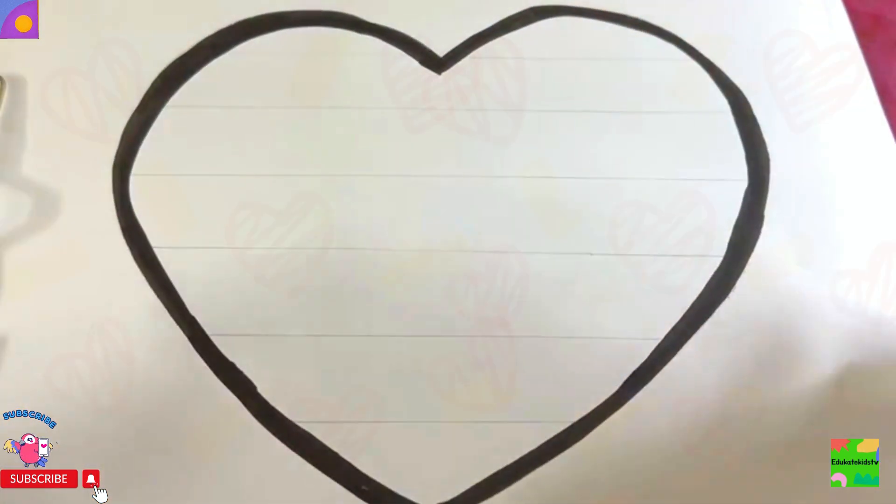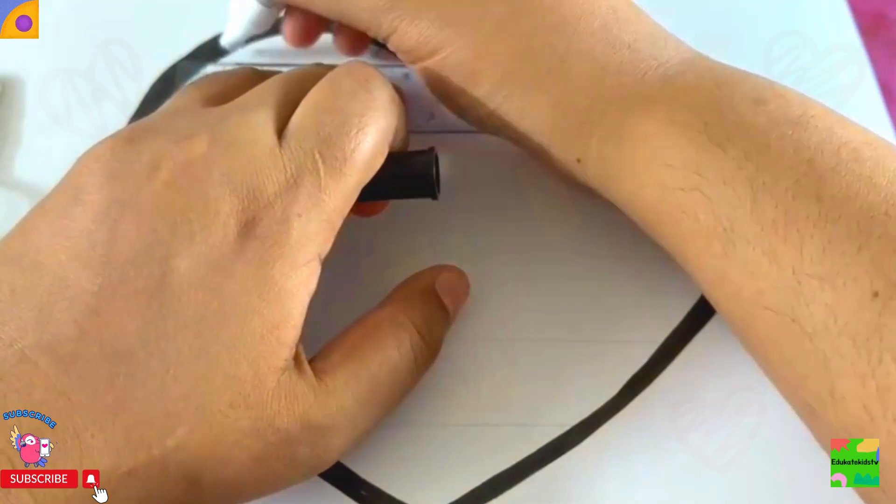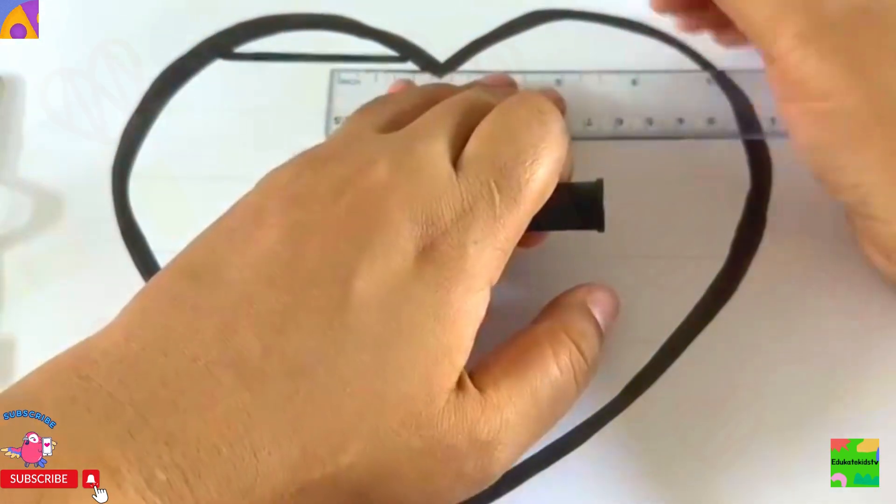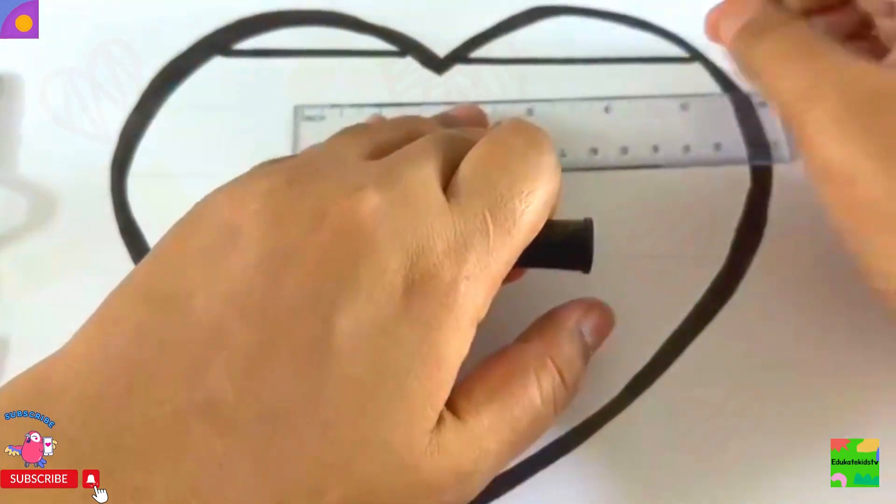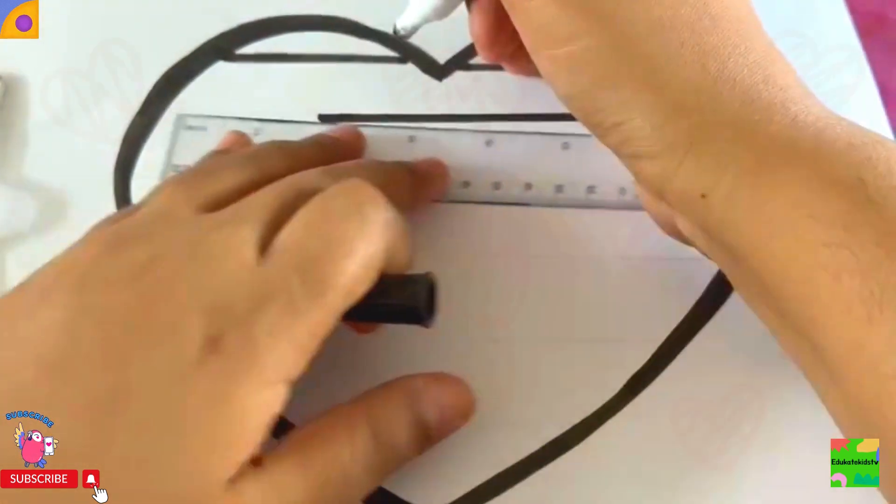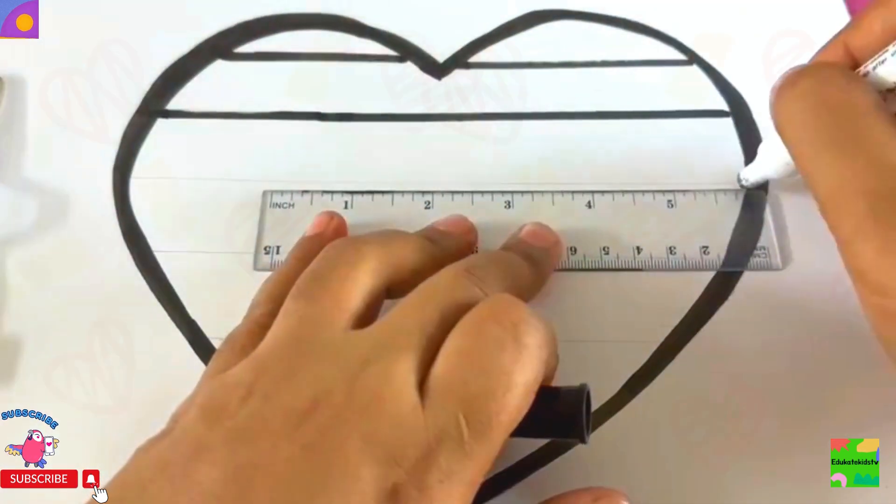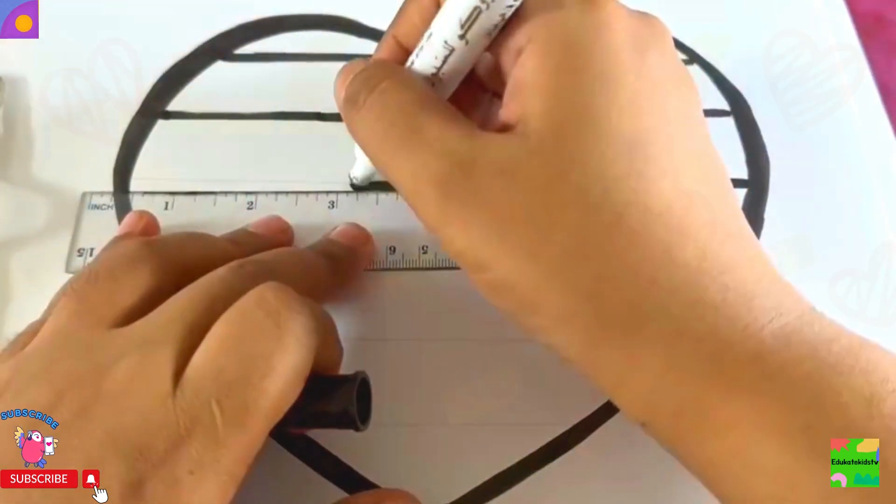Now I'll draw the lines inside it with my ruler. Wow! Lovely! A big heart to make a pop-it.